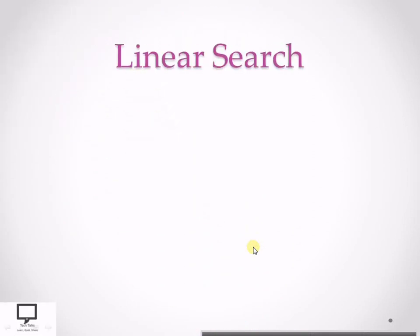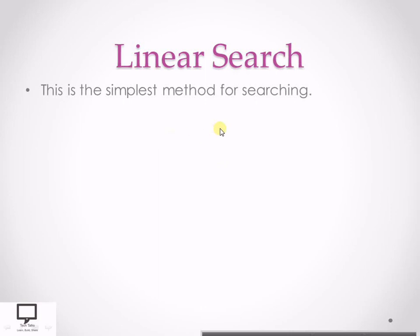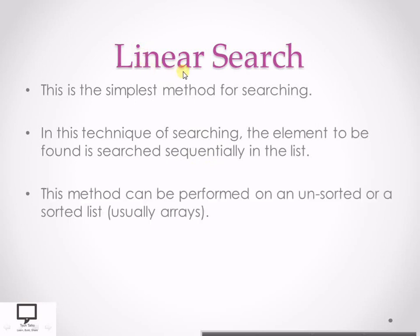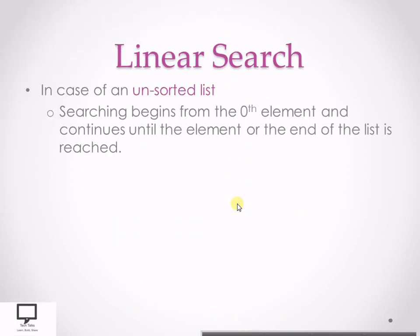What is linear search? This is a very simple method of searching. The key element to be found is searched sequentially in the list — that is why it is called sequential search or linear search. This method can be performed on both unsorted and sorted data, and the data set will usually be an array. Linear search is helpful in both cases.